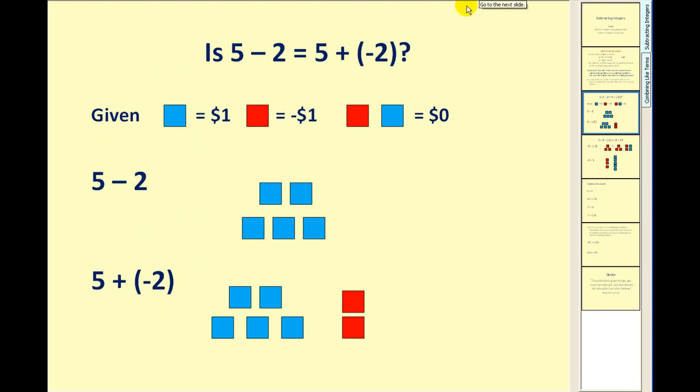So let's start by looking at this problem. Is 5 minus 2 really equal to 5 plus negative 2? And to illustrate this, I'm going to use algebra tiles. One blue square equals 1 or $1, and one red square equals negative 1 or negative $1. So together, a positive 1 and a negative 1 combine to equal 0 or $0.